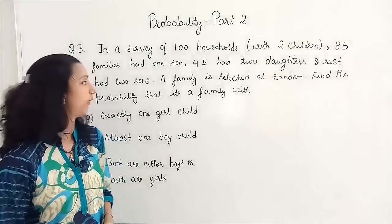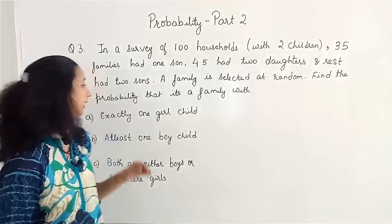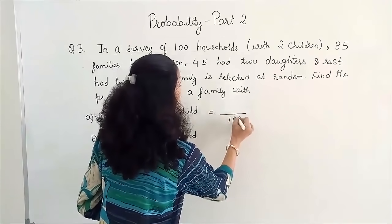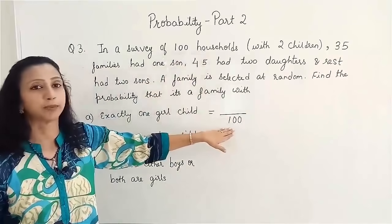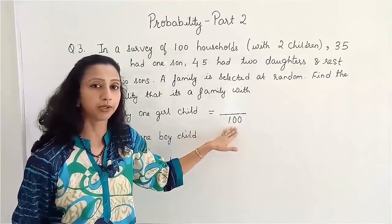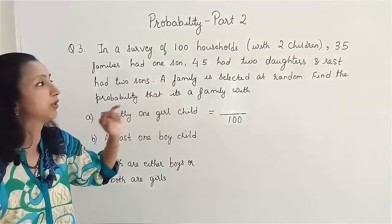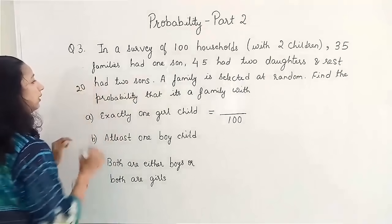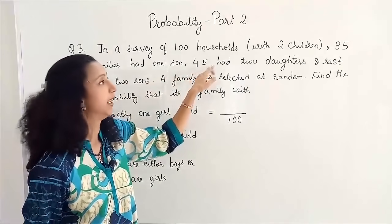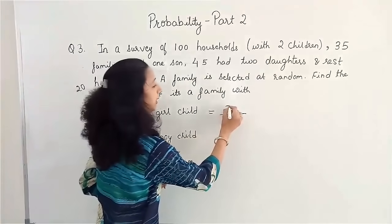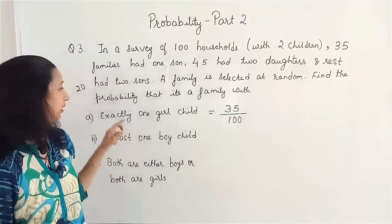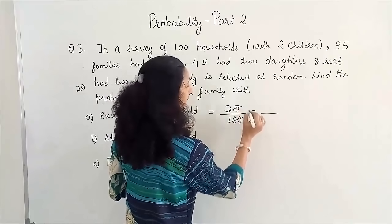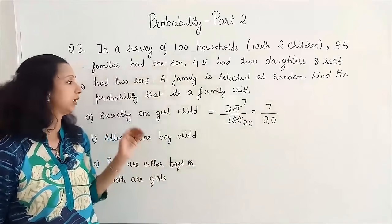A family is selected at random. Find the probability that this family has exactly 1 girl child — meaning only 1 girl, not 2. The total number of outcomes is 100, as the survey covered 100 households. For exactly 1 girl child: 20 families have 2 sons, 45 have 2 daughters, and 35 families have 1 son and 1 daughter, so 35 is our favourable outcome. Reducing 35 by 100, dividing by 5, gives 7 by 20.